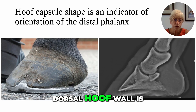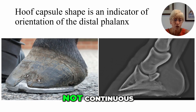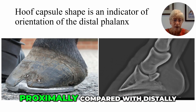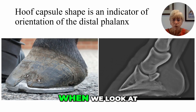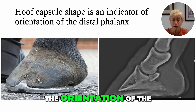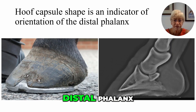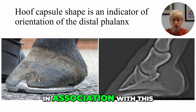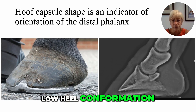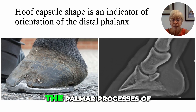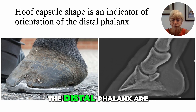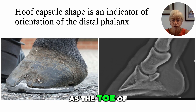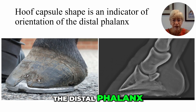The angle of the heel is at a much lower angle compared to the angle of the dorsal hoof wall. The angle of the dorsal hoof wall is not continuous — it is more steep proximally compared with distally. When we look at the orientation of the distal phalanx, we can see that in association with this low heel conformation, the palmar processes of the distal phalanx are at the same level as the toe of the distal phalanx.